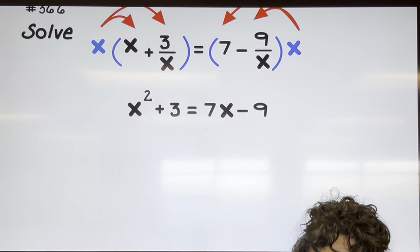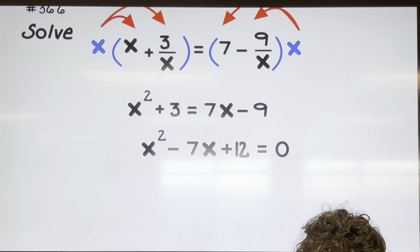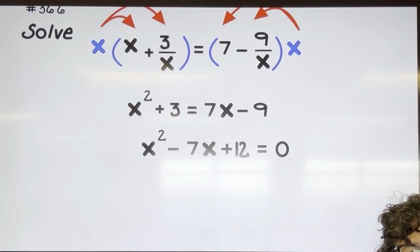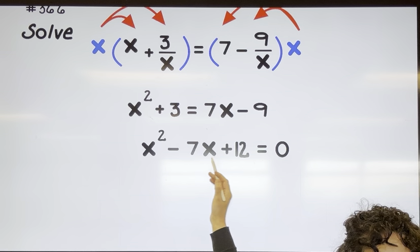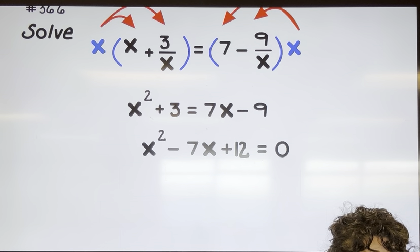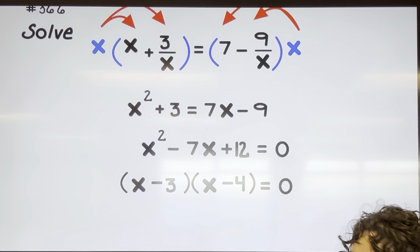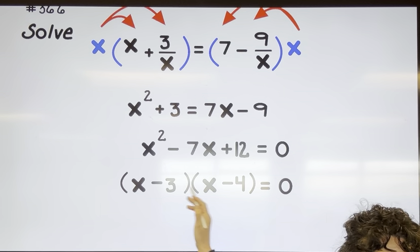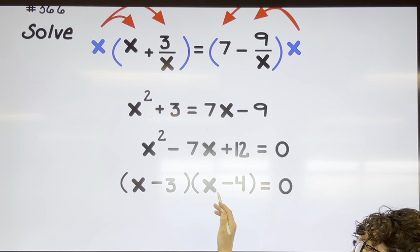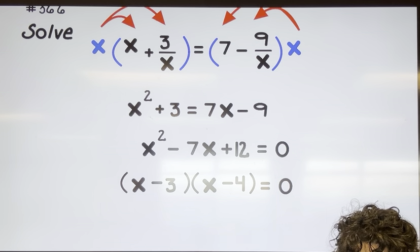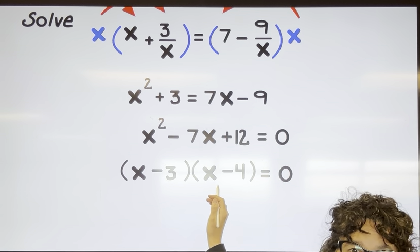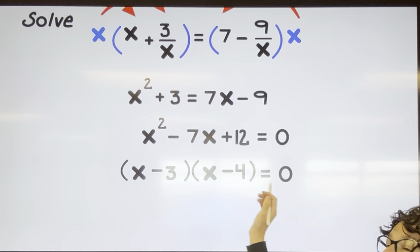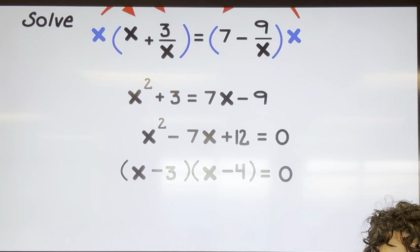And add nine — three and nine makes twelve. Now that I have everything on the same side, I'm going to factor by thinking of two numbers that multiply together to get twelve and add up to negative seven. That's going to be negative three and negative four. So this factors to X minus three times X minus four.